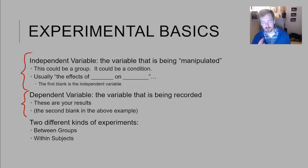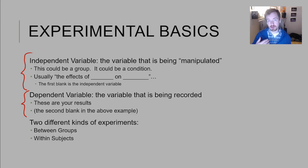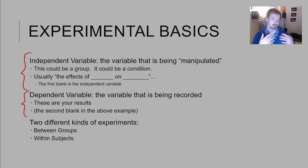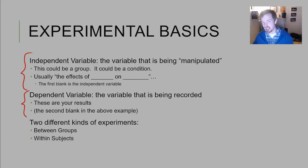The dependent variable is what I think of as the results variable — what you are recording and measuring to see if there are differences in your groups. For example, in a sleep and memory study, you might have one group get eight hours of sleep and another group get two hours, then give them a memory test. The independent variable is the sleep condition, and the dependent variable is however we measure memory — maybe a recall test.